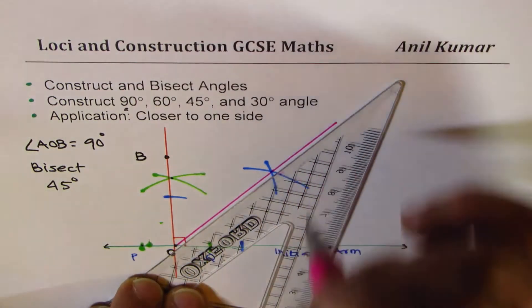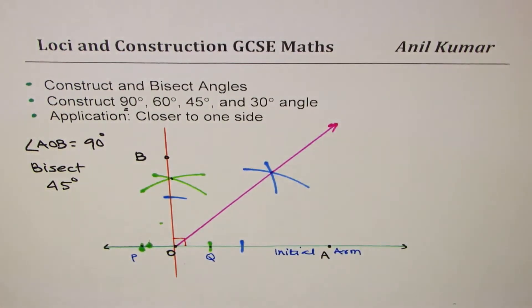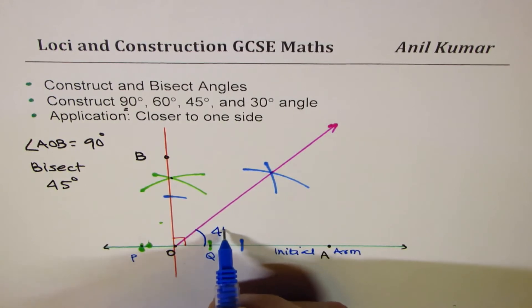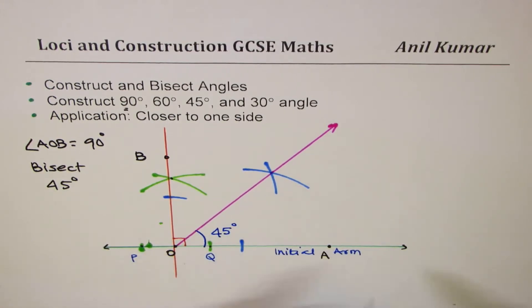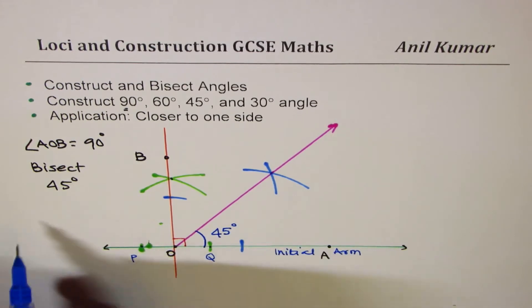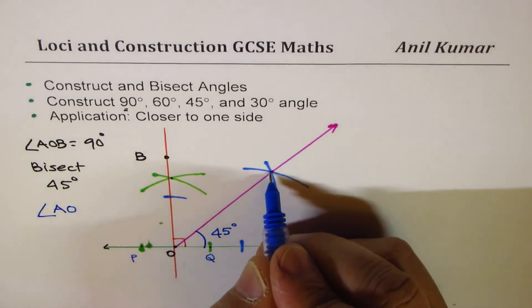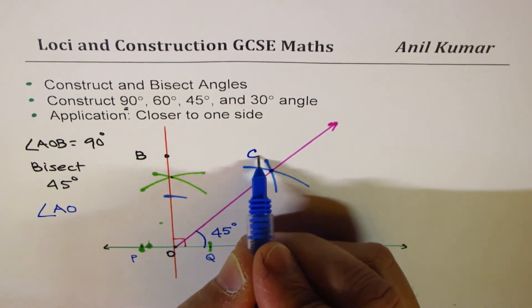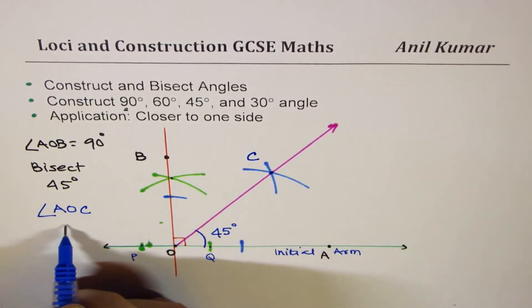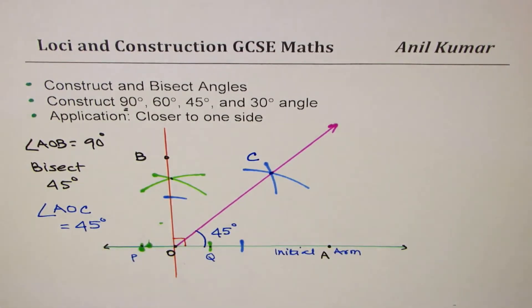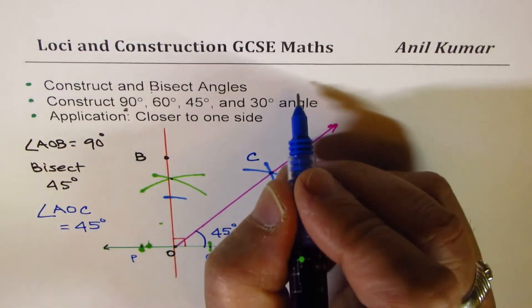So this ray produces an angle of 45 degrees with our initial arm OA. What we get now here is that the angle AOC, let me say this point is C, this angle is equal to 45 degrees, which is half of 90. So what we did is angle bisector.